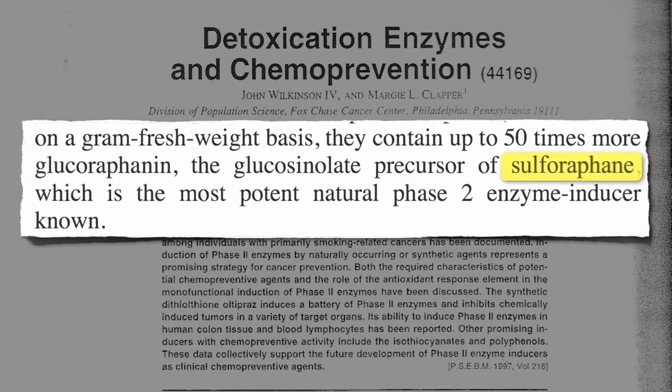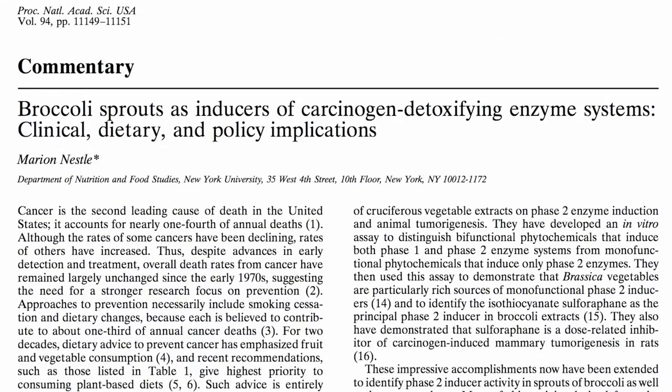And sulforaphane is the most potent natural phase II enzyme inducer known. It's one of our liver's detoxification systems. So where do we find this stuff? Broccoli, which produces more than any other known plant in the world.